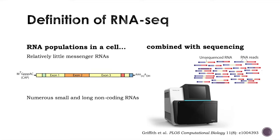RNA sequencing mainly refers to second-generation sequencing technologies, currently dominated by Illumina sequencing-by-synthesis technology. It is also important to keep in mind that DNA is sequenced rather than RNA — the RNA is turned into DNA and then amplified before sequencing. Furthermore, only the ends of the sequencing libraries are sequenced, which is why you often see single-end or paired-end mentioned.